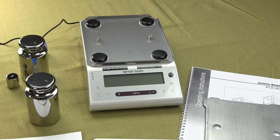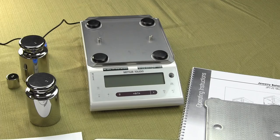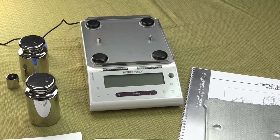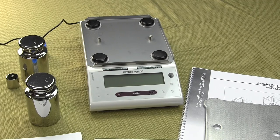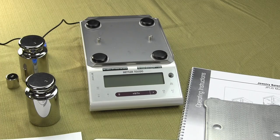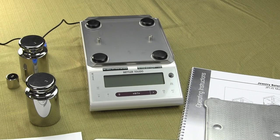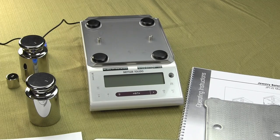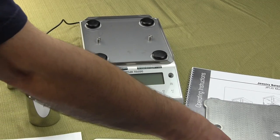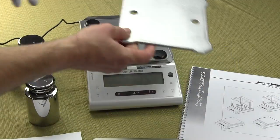And again, we covered that it has the LCD display. Battery power is awesome. It is legal for trade. It's legal for trade in grams, carats, pounds, ounces, troy ounces, and pennyweight. So these are some of the highlights of the brand new Mettler Toledo JS series.